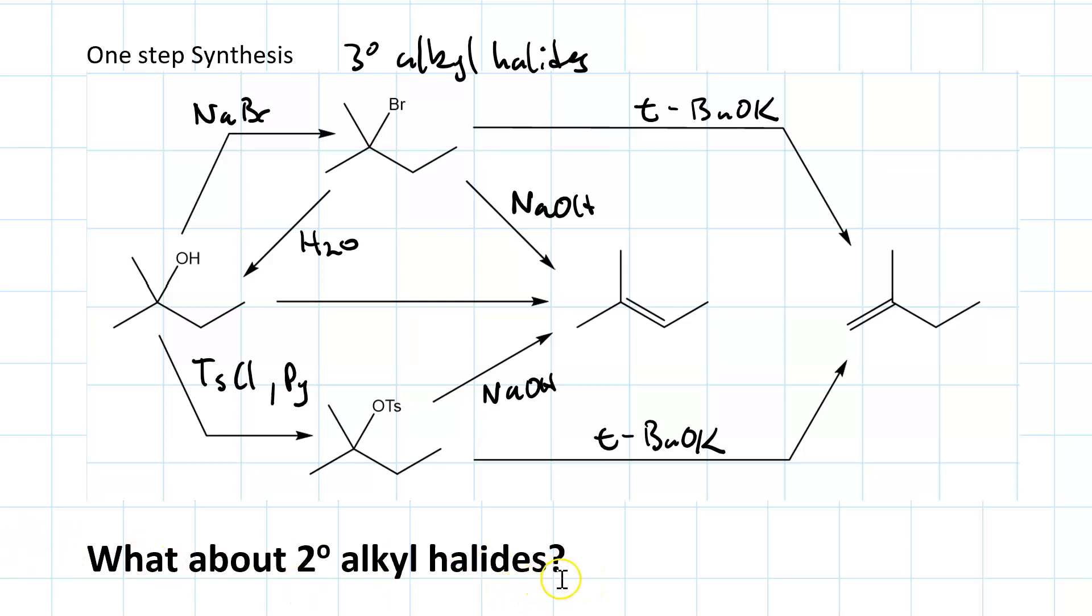With a tertiary alkyl halide, if you treat it with a reagent that is a strong base, strong nucleophile, like an oxyanion, you're going to get an E2 reaction instead of an SN2. With secondary, you get a mixture.